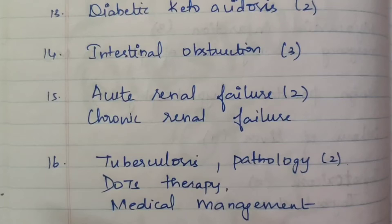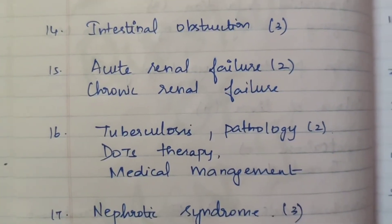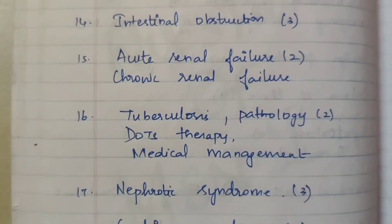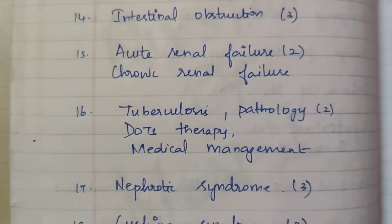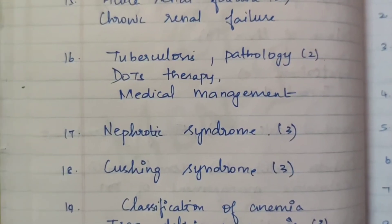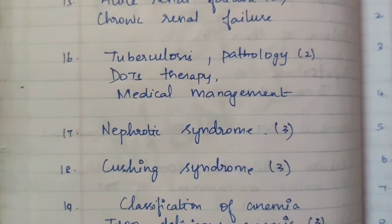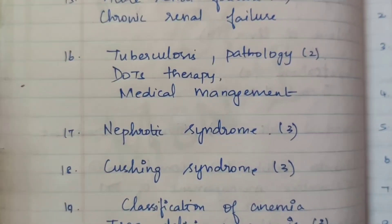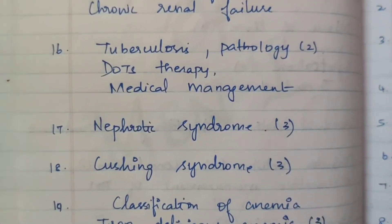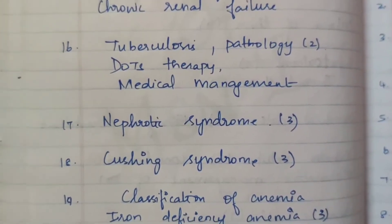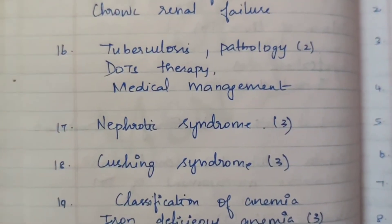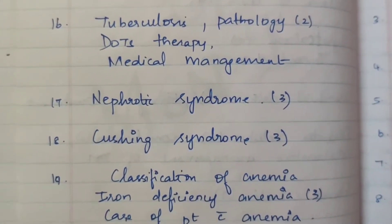14th one is intestinal obstruction, 3 times. 15th one is renal failure — acute renal failure 2 times as 15 marks, and chronic renal failure 5 marks. 16th one is tuberculosis. Study the pathology of tuberculosis including definition, causes, treatment, and management, including DOTS therapy and medical management.